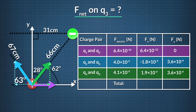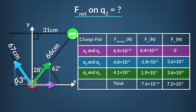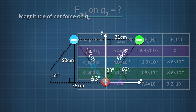Adding up all the x components and all the y components, we find the total resulting x force component acting on charge q3 to be 7.4 times 10 to the negative tenth newtons in the x direction, and the total y force component to be 7.2 times 10 to the negative ninth newtons in the y direction.